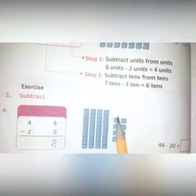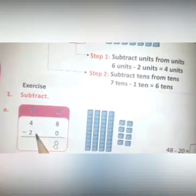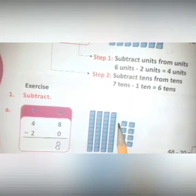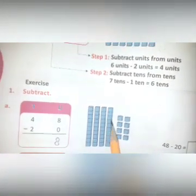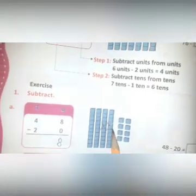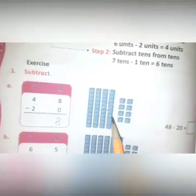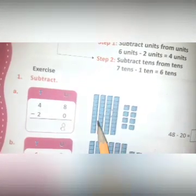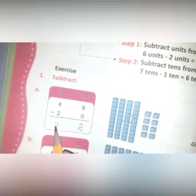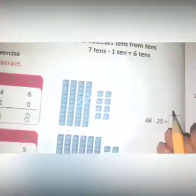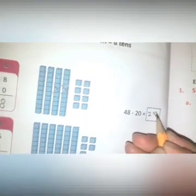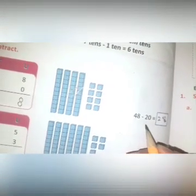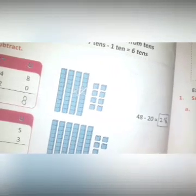Write eight here in the units place. Now you have to subtract two from the four — you will cut two rows of blocks, and one and two are remaining, so the answer is two. Write the answer 28 here. 48 minus 20 is equal to 28.